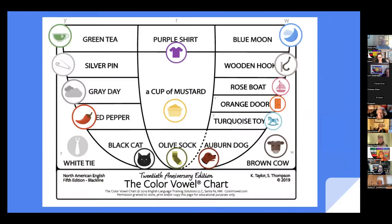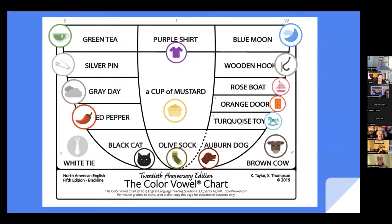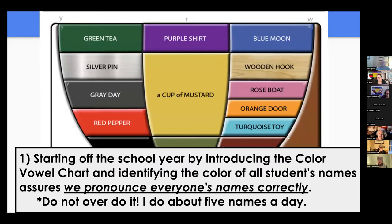In my class, we start with the aural before introducing letters. Once they learn the sounds, we can talk about body parts and say 'red pepper head, red pepper leg.' I'm excited that in our library we have access to Color Vowel icons to do word markups. I start off the school year by making sure we pronounce everybody's names correctly — that's the most important thing with ESOL students.